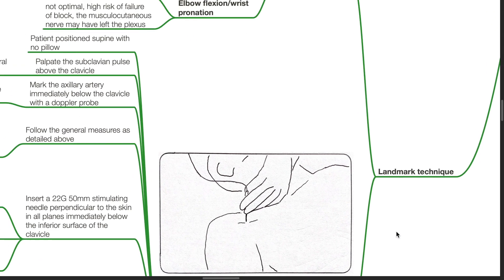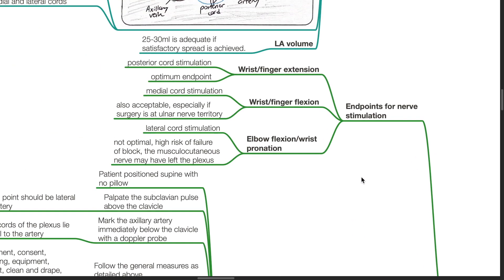Landmark technique. Endpoints for nerve stimulation: wrist and finger extension is the result of posterior cord stimulation and is an optimal endpoint. Wrist or finger flexion is due to medial cord stimulation. This is also acceptable, especially if surgery is at the ulnar nerve territory. Elbow flexion or wrist pronation is due to lateral cord stimulation. This is not optimal and there is a high risk of failure of the block. The musculocutaneous nerve may have left the plexus.